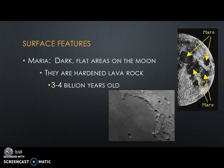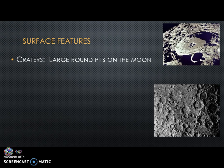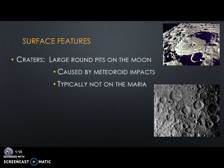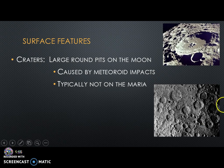The second feature is craters — large, round pits on the moon caused by meteoroid impacts. We believe the craters were made before the maria existed, because we typically don't find craters in the maria. It's assumed many craters formed all at once during that major impact event discussed in the video you watched.